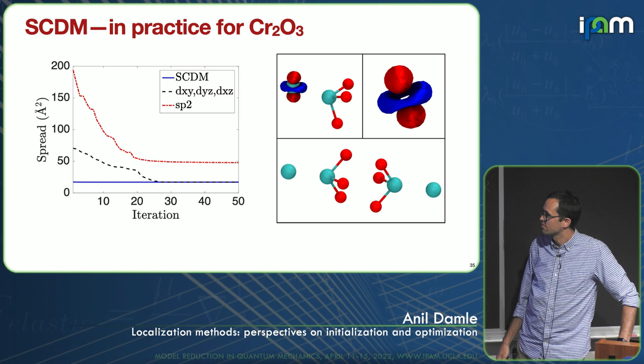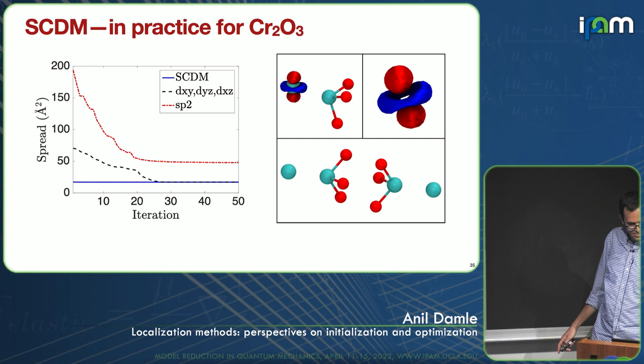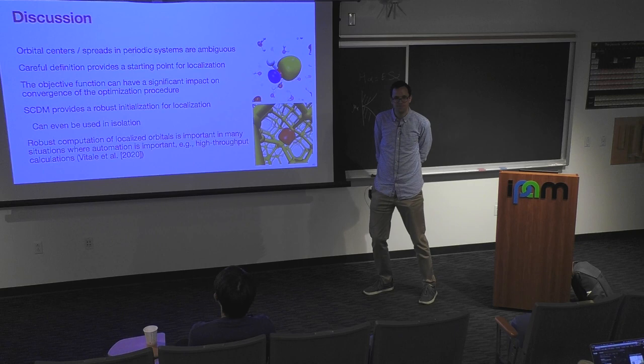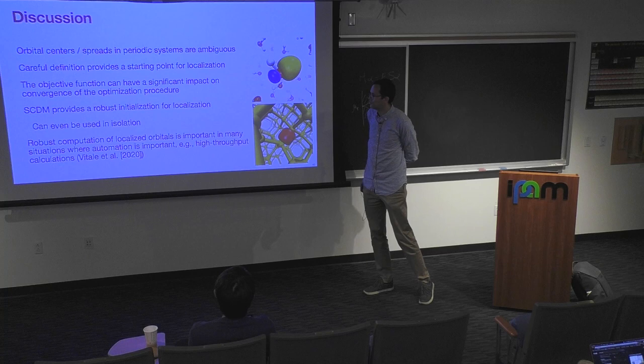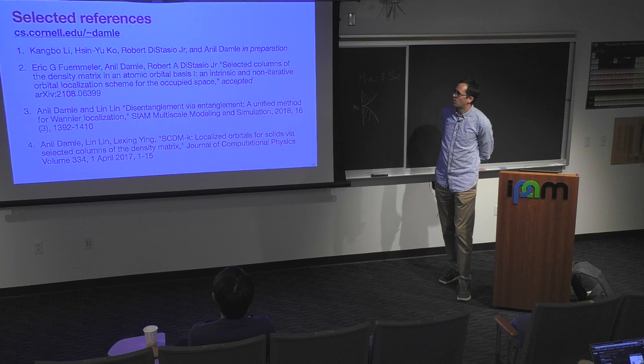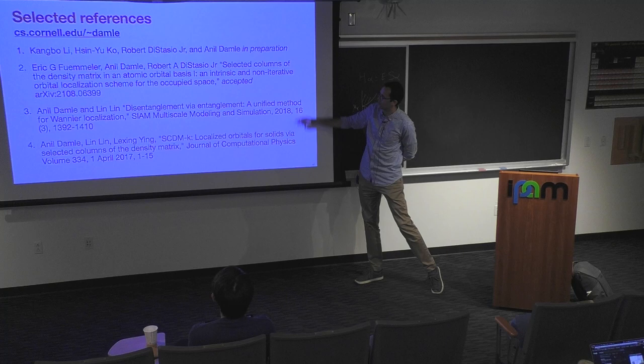One example shows that with SCDM you get to where you're going right from the start. If you start with d orbitals or sp2 orbitals, sometimes you converge to different local minima or at least it takes some time. To conclude: we have new definitions for periodic systems of centers and spreads that are easier to optimize, and SCDM is a great way to do initialization. References for all of this can be found on my website. We're still working on the manuscript for the first part. Thank you.